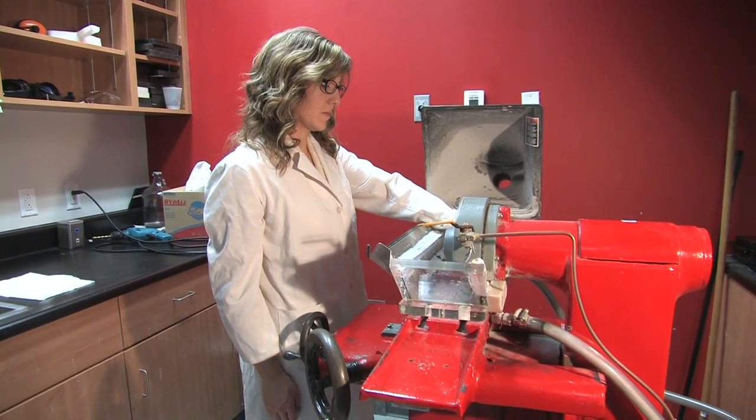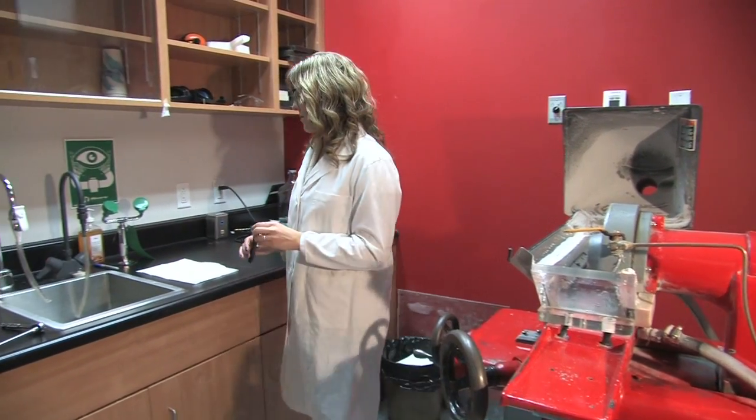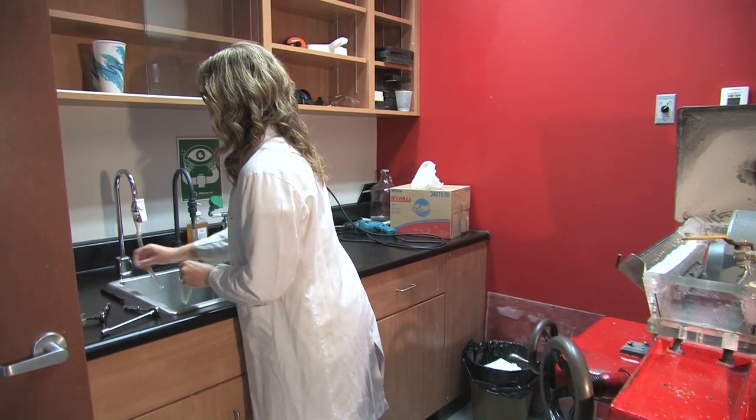Remove and discard the first piece that falls off. This contains the outer regions or anterior halves of the otoliths and these are not used for aging.